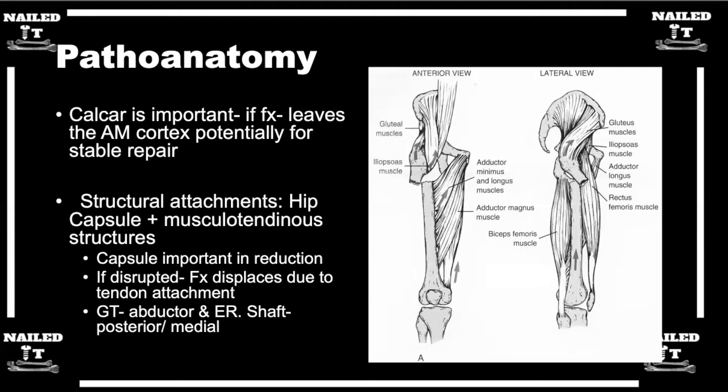You have to translate that knowledge into the ability to overcome those forces in the operating room. There are a lot of different strategies in terms of how you position the patient, how you apply fixation, and what reduction aids you use. A constant thing to remember is what is happening with the lesser trochanter. Frequently we see the lesser trochanter fractured off, so you don't necessarily get that flexion deforming moment of the proximal fragment. But when it's still attached, it can give you a really aggressive flexion deformity of the proximal piece.